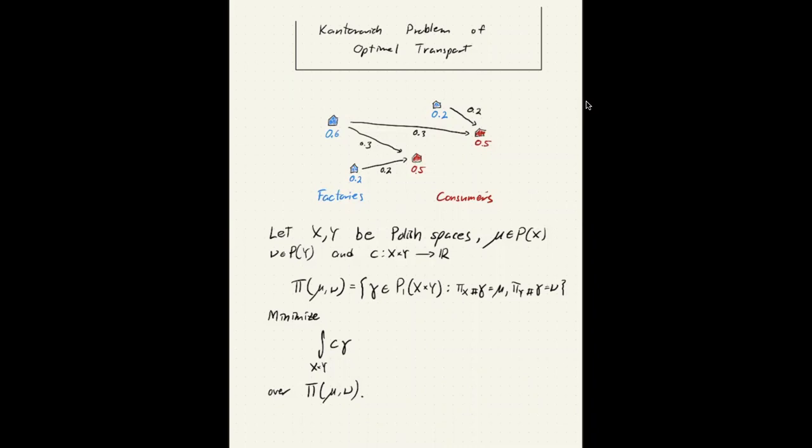Before we move on to examples and remarks, there are a couple of things I think we should note here. First of all, the objective function here is linear. It's linear in γ. Moreover, the set we're optimizing over is in fact a convex subset of the space of signed measures.